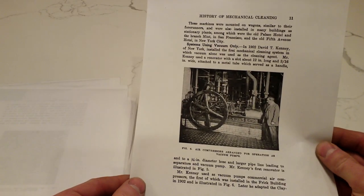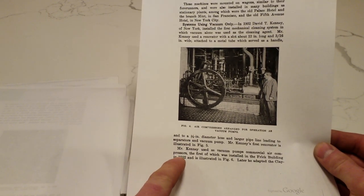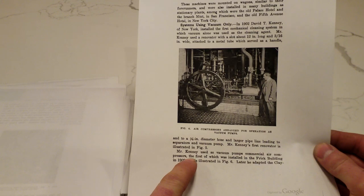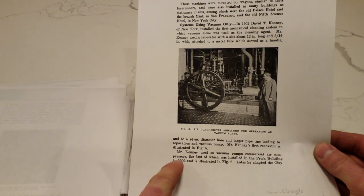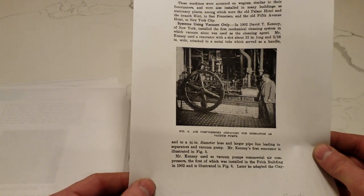And there's the first vacuum producer that was in the Frick building in New York City. Used as vacuum pumps, commercial air compressors. Look at that thing. So it's an air compressor, but running in reverse.